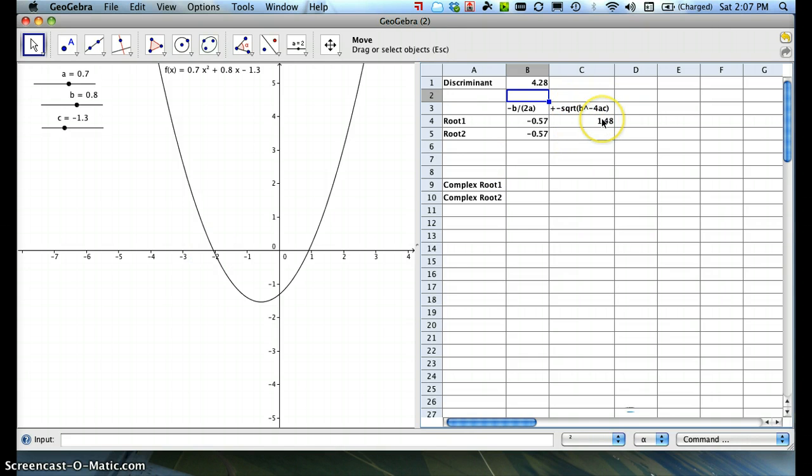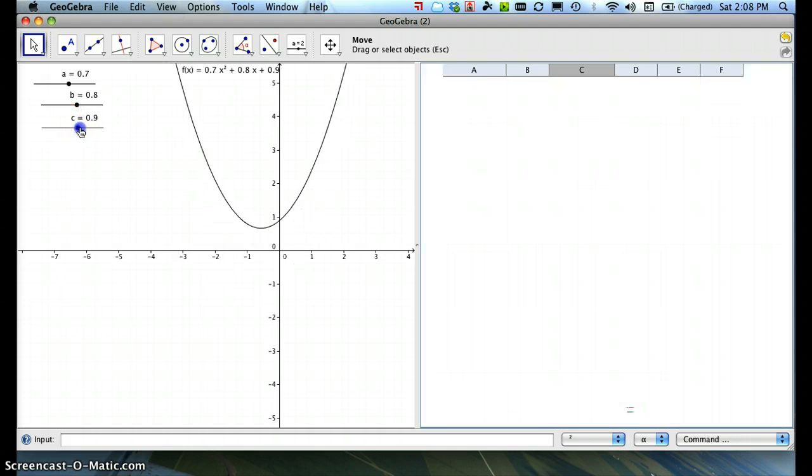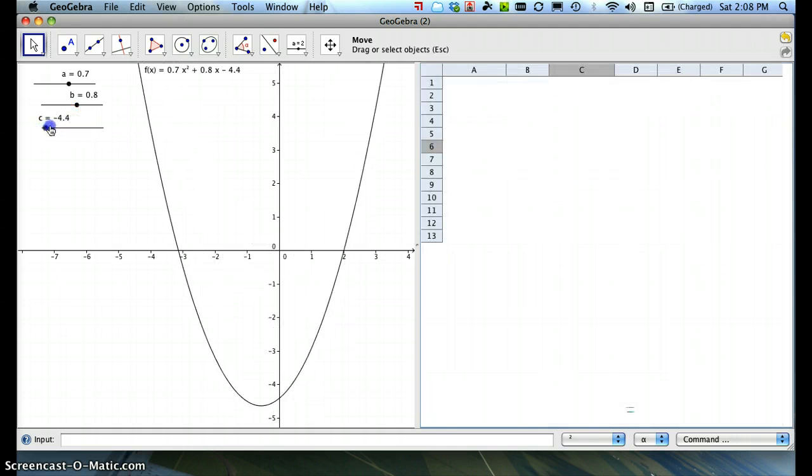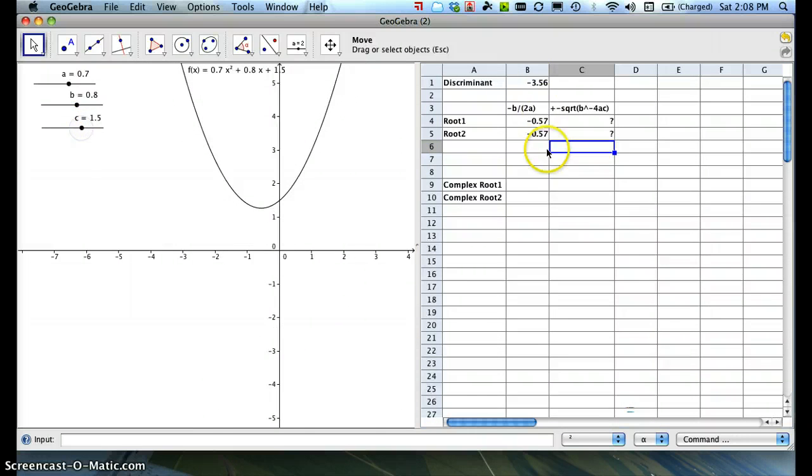And then I want the same thing that I have here, except for the opposite. So I'm going to say equals the opposite of C4. And then I can check again. Again, when I have a discriminant that's negative, this just goes blank, which is fine.